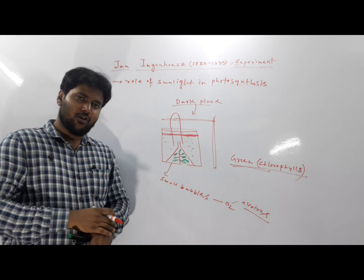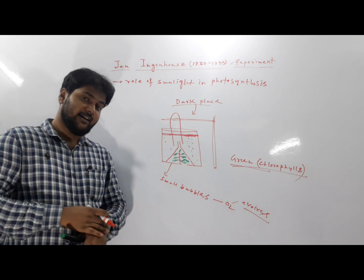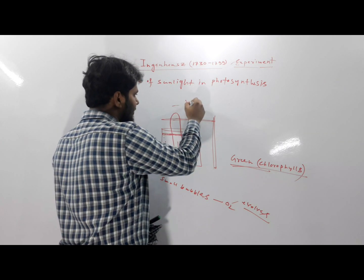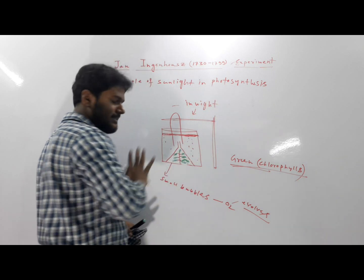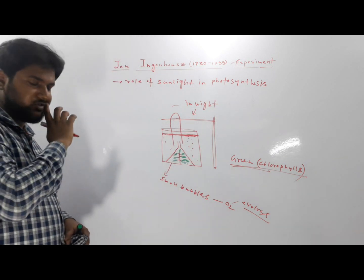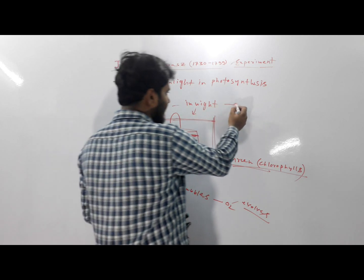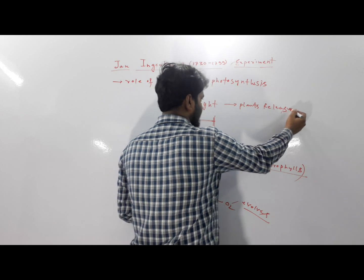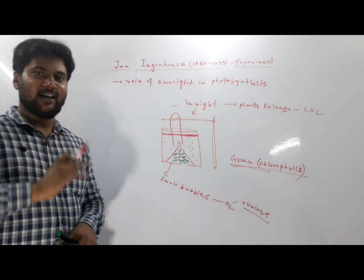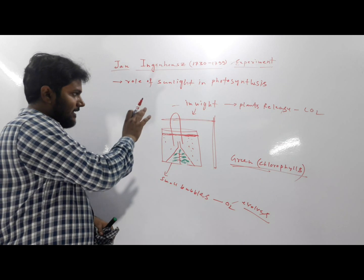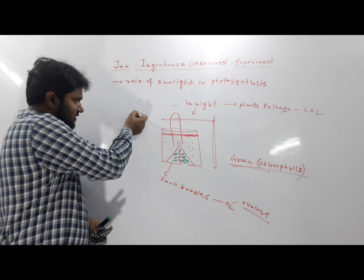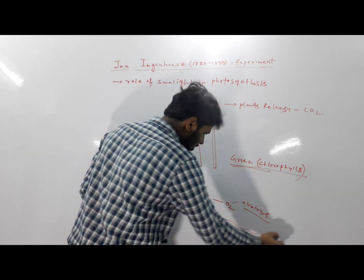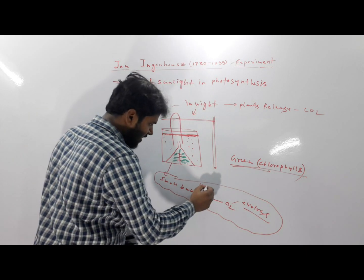Jan Ingenhousz also realized and showed that in darkness, or at night, plants release CO2. He also demonstrated that in the presence of sunlight, a small amount of oxygen evolves from the green parts of the plant.